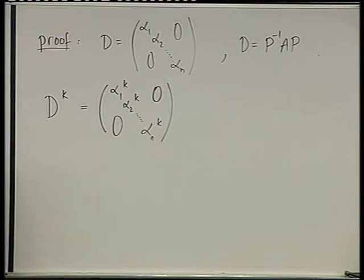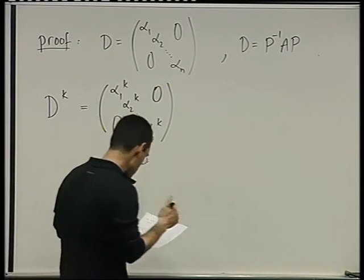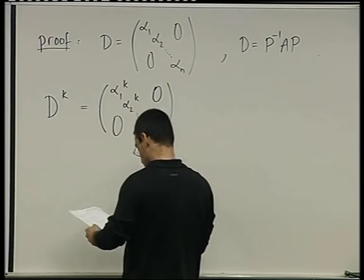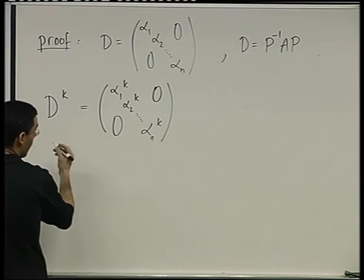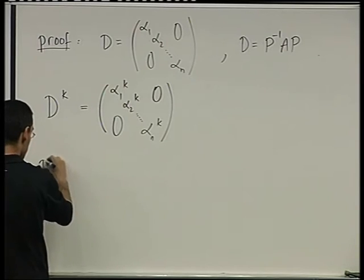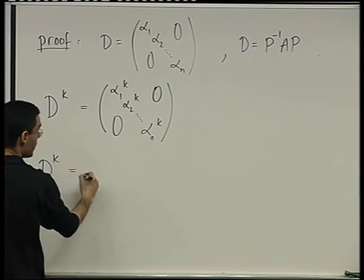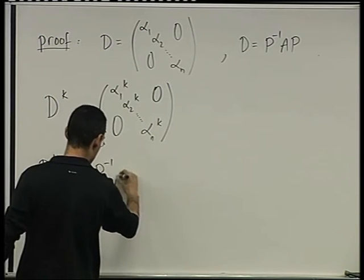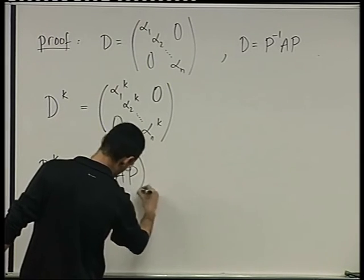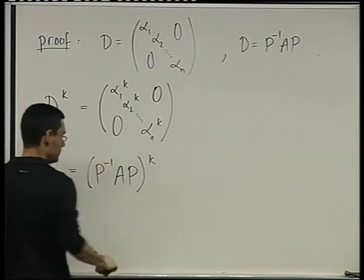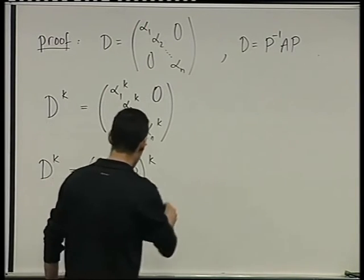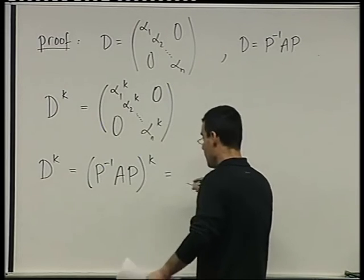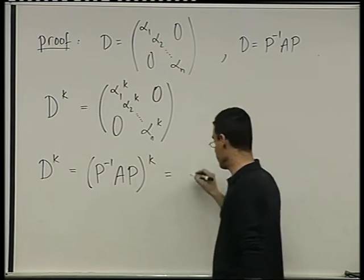So raising a diagonal matrix to a power, that's extremely easy. Therefore, or on the other hand, D to the power of K, D was P inverse AP to the power of K. Right? And what is this thing? It's just writing it K times.